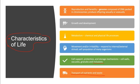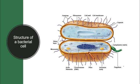Transport of nutrients and wastes in and out of the cell is another very important characteristic of life. The cell needs raw material for producing food and energy, and when excess waste material is produced, it needs to be cleared out. All of these are the most important properties of life.